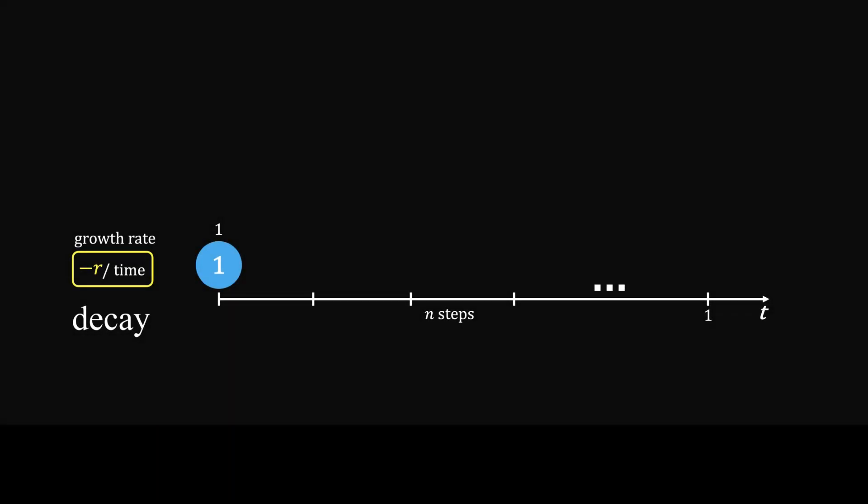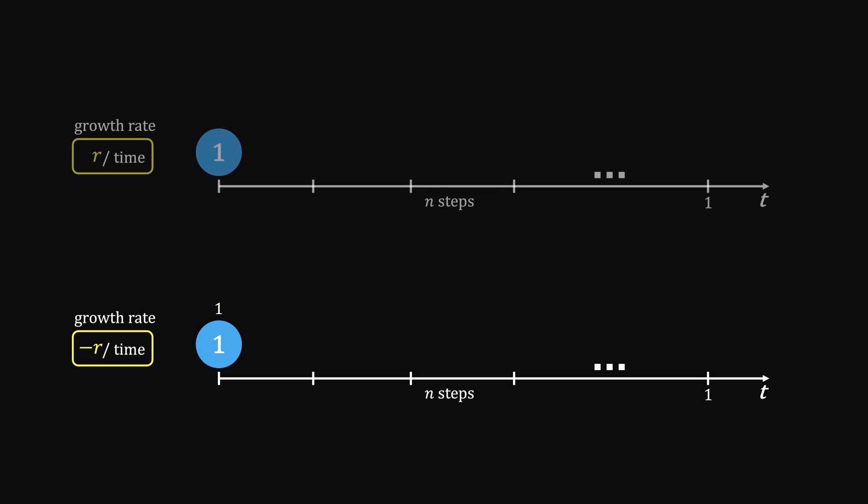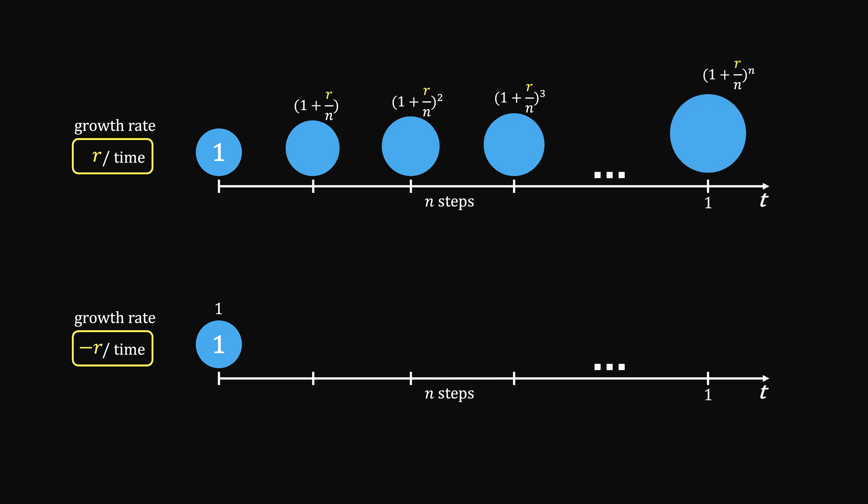Now, can we also use e to express decay? In the case of growth, each step grows by r over n over n steps. It takes on the form of the nth power.